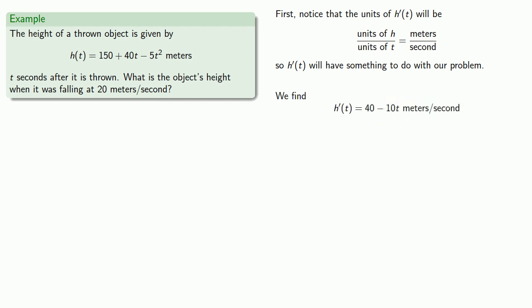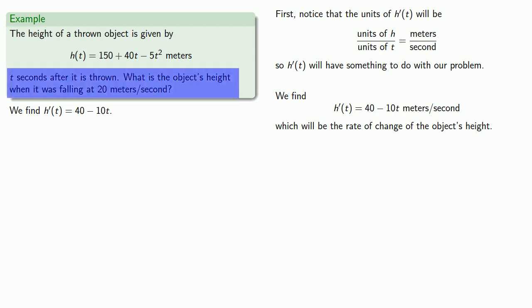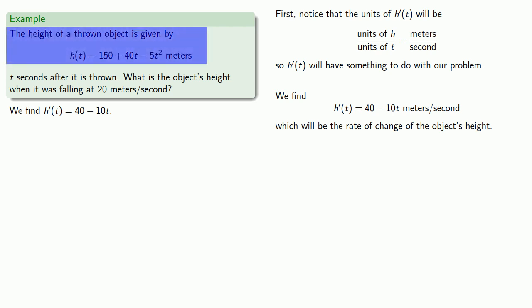And we know that this will be the rate of change of the object's height. And let's consider this information. The object's height when it was falling at 20 meters per second. And let's consider what that means. First, the important thing to recognize here is that the formula we have is for the height of the object. And so if the object is falling at 20 meters per second, what we want to do is we want to translate this information into some statement about the height of the object.